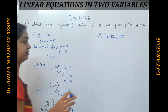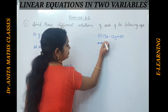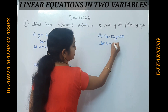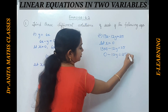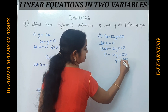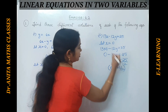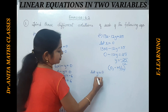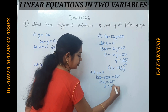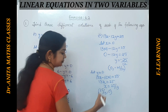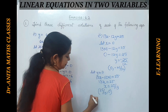Now the fourth equation 13x minus 12y equals 25 is already in general form. Let x equal to 0: 13 into 0 minus 12y equals 25, so minus 12y equals 25, giving y equals minus 25 upon 12. The ordered pair is (0, -25/12). Now let y equal to 0: 13x equals 25, so x equals 25 upon 13. The ordered pair is (25/13, 0).